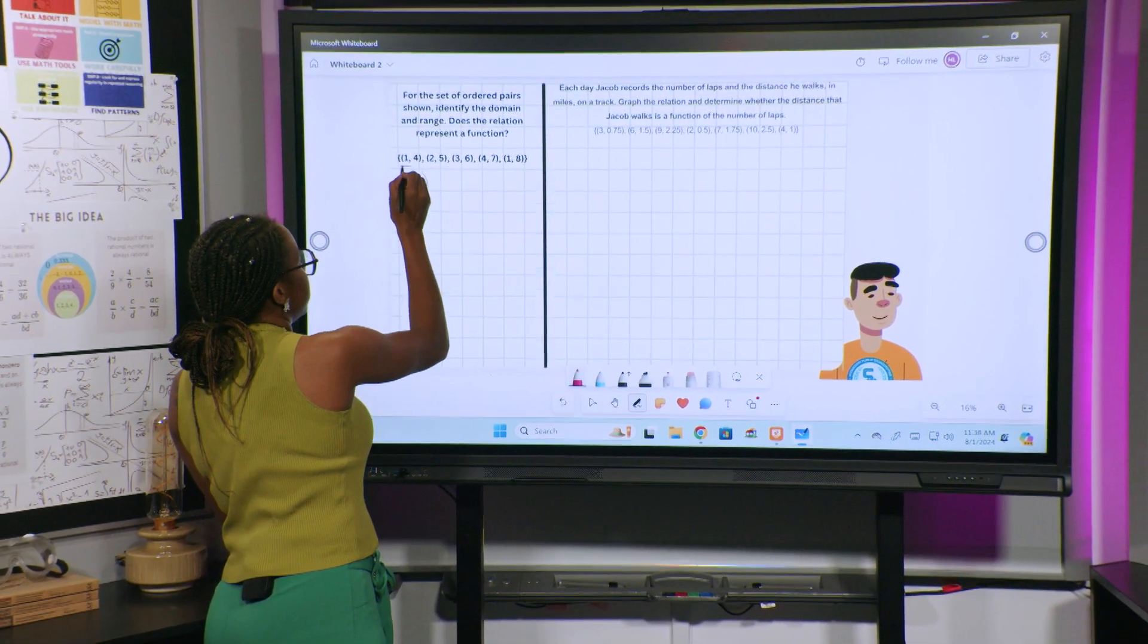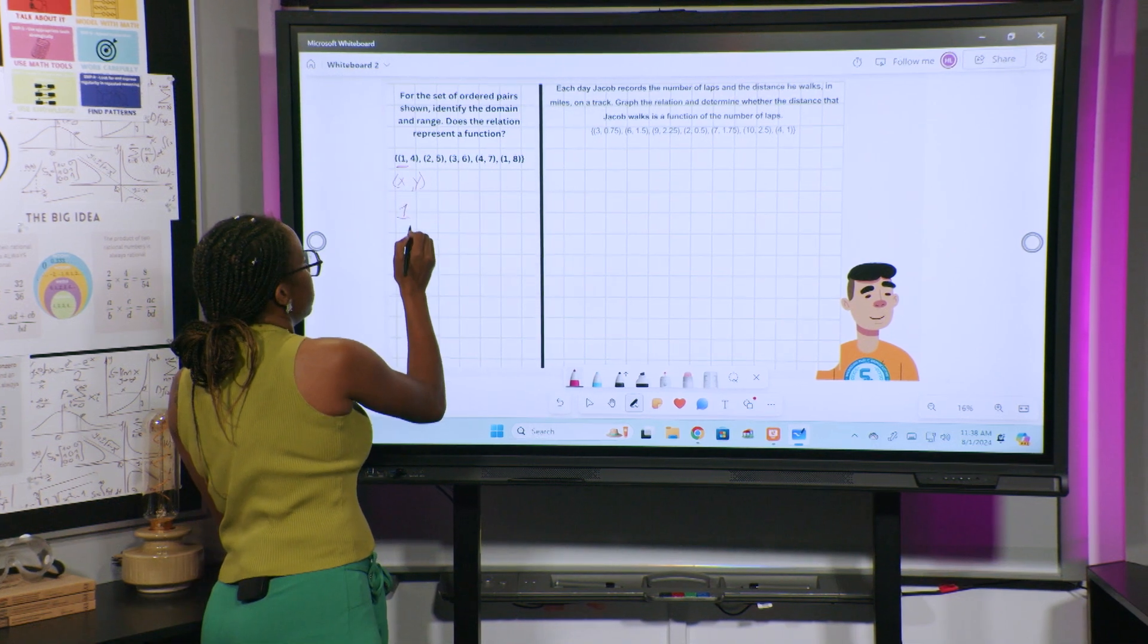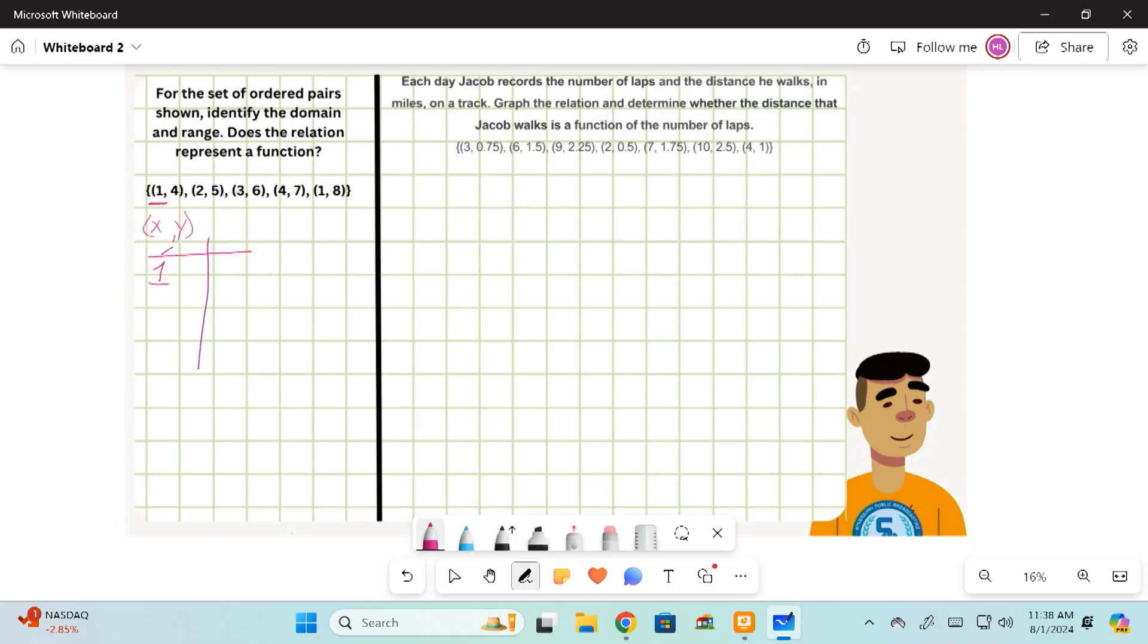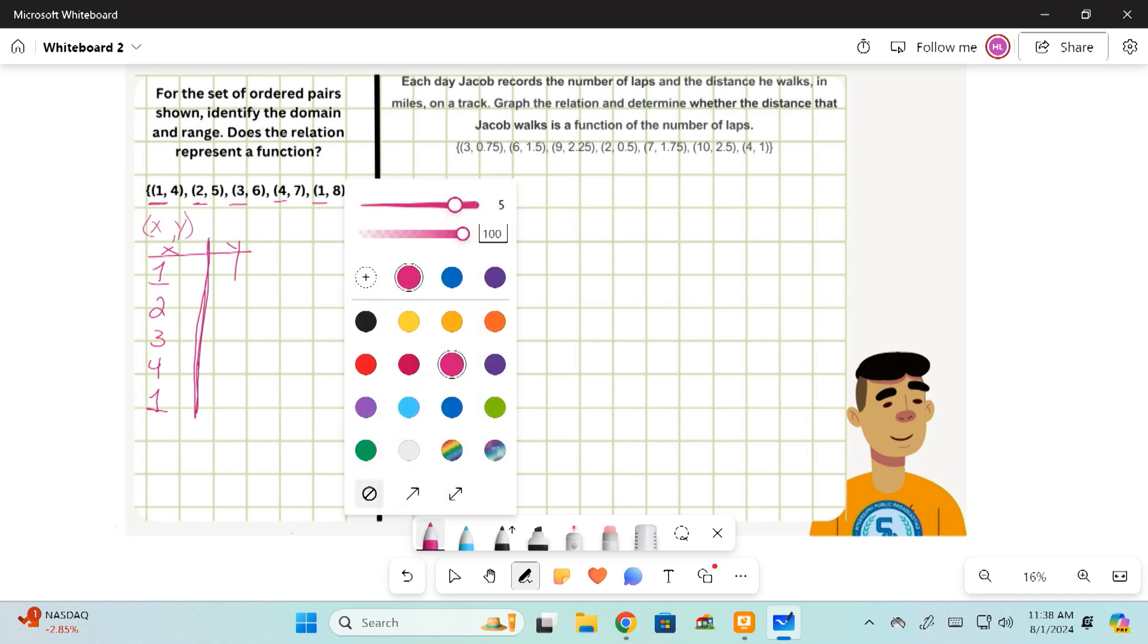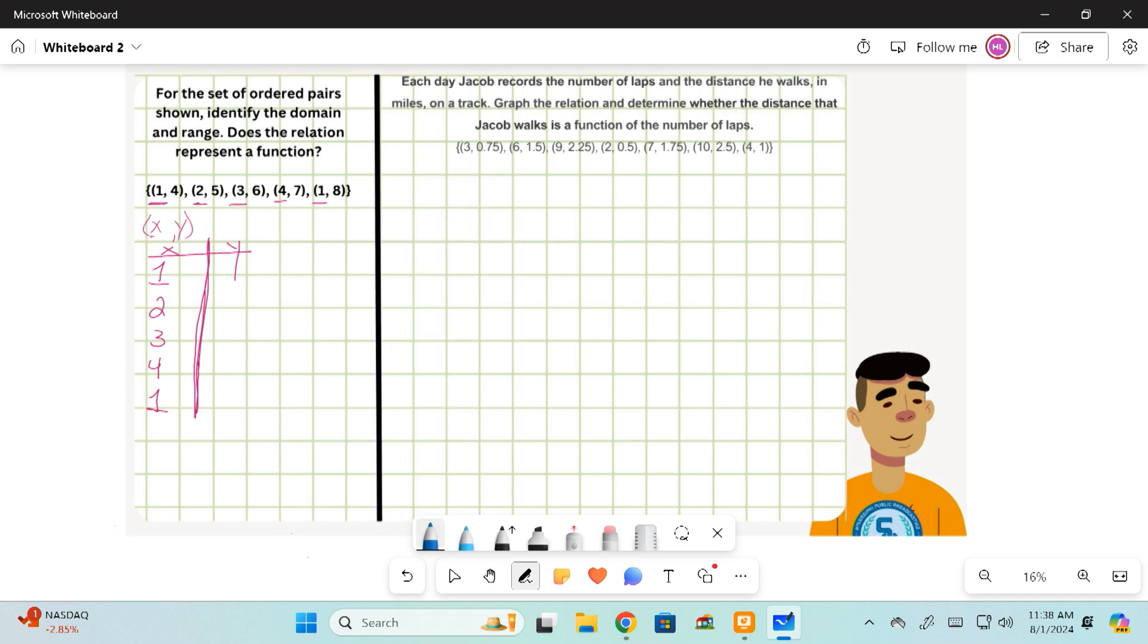So I know I have one, and if I do it in a table, x and y, I have 1, 2, 3, 4, and 1. Well, for my y's, I'm going to change my color, x and y, I have 4, 5, 6, 7, and 8.